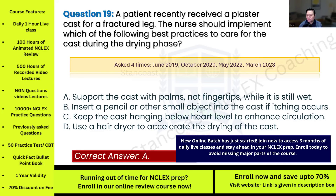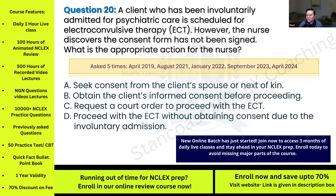Question twenty: A client who has been involuntarily admitted for psychiatric care is scheduled for electroconvulsive therapy (ECT). However, the nurse discovers the consent form has not been signed. What is the appropriate action for the nurse? This has been asked five times. Options: A) seek consent from the client's spouse or next of kin; B) obtain the client's informed consent before proceeding; C) request a court order to proceed with ECT; D) proceed with ECT without obtaining consent due to the involuntary admission.